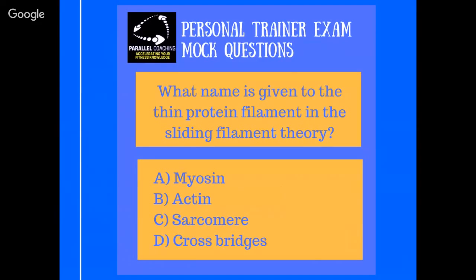Let's go with the first question. What name is given to the thin protein filament in the sliding filament theory? I've gone straight in with a nice tough one. I want to give you an understanding of all the different types of exam questions that come up. Have a little guess right now. What name is given to the thin protein filament in the sliding filament theory? Is it A, myosin? Is it B, actin? Is it C, sarcomere? Or is it D, cross bridges?